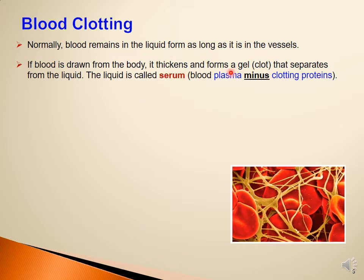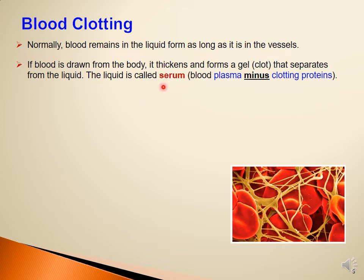If blood is taken out of the body and put in a test tube, it will thicken and form a gel-like structure called a clot that separates from the liquid. The liquid part is then called serum rather than plasma, because serum lacks the clotting factors — during the clotting process the clotting factors are consumed, which is why the remaining liquid is called serum.